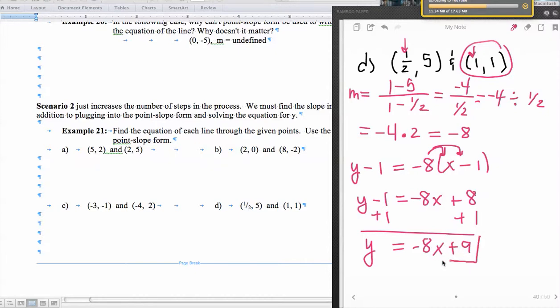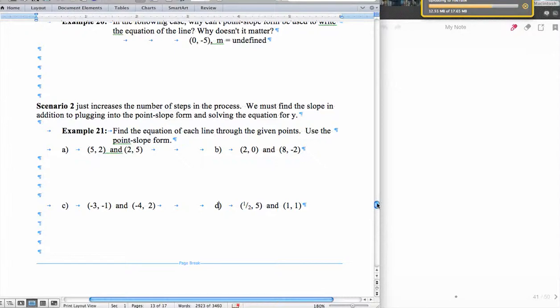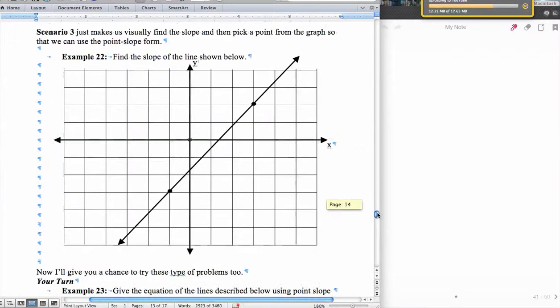And so now we have slope-intercept form. And we can check and see if it satisfies this. So one-half of 8 is negative 4 and negative 4 plus 9 is 5. And yep, check. It does satisfy it. Alright, moving right along.